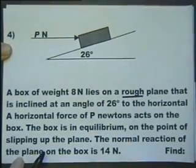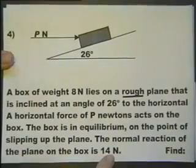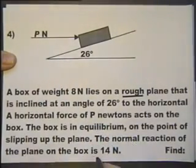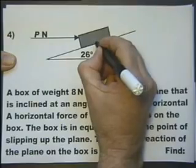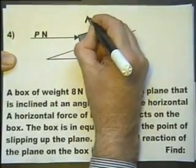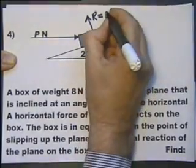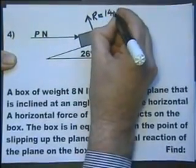The normal reaction to the plane on the box is 14 Newtons. So let's see what we can add to our diagram. Let's do that last bit first. The normal reaction, which is something we usually have to work out, we're actually told that's 14 Newtons, so let's put that on our diagram.